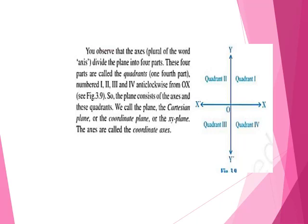A quadrant is one-fourth part of the plane. The quadrants are numbered starting from the positive direction going anticlockwise: Quadrant I, Quadrant II, Quadrant III, and Quadrant IV. The plane consisting of these axes and quadrants is called the Cartesian plane, or the coordinate plane, or the XY plane. The axes are called the coordinate axes.